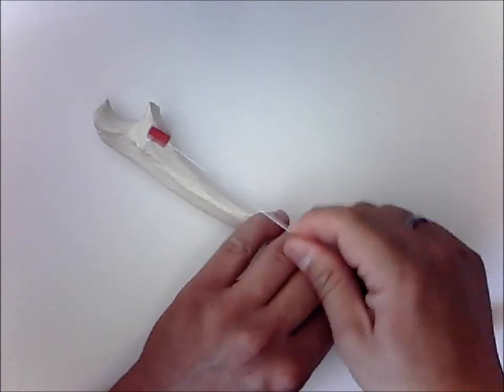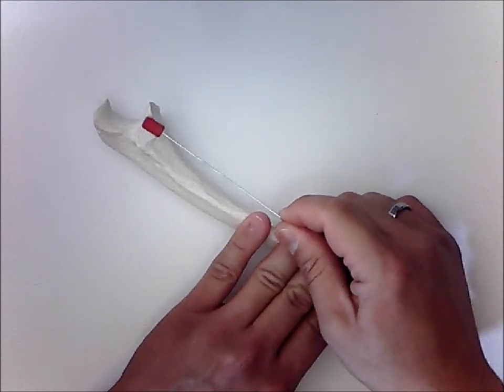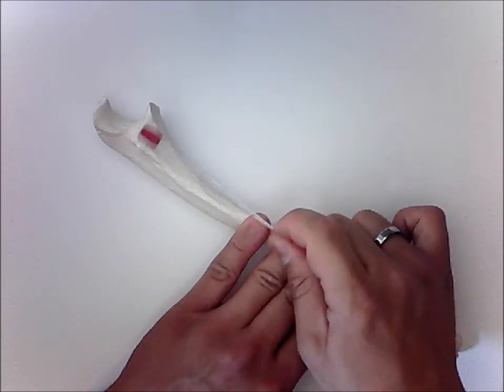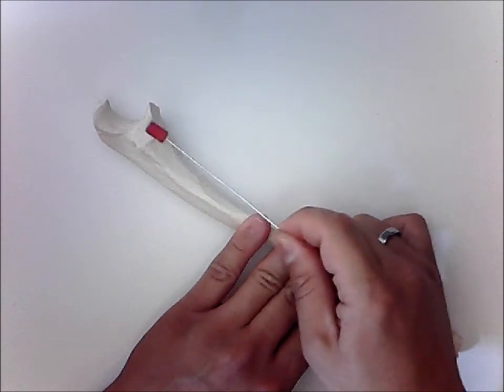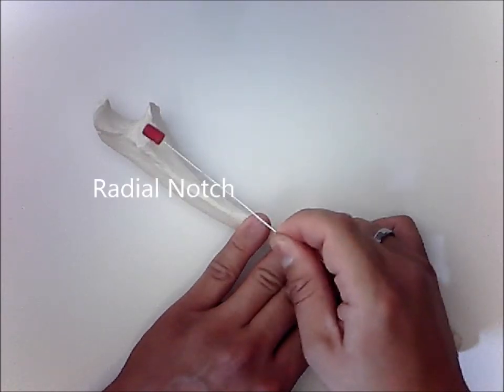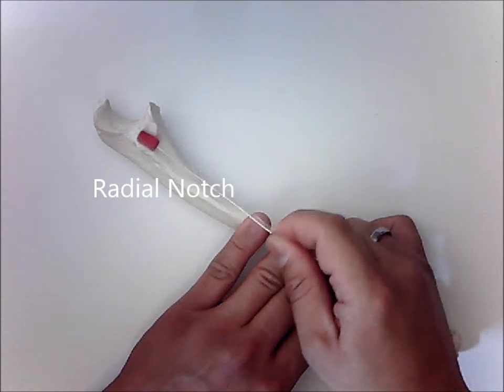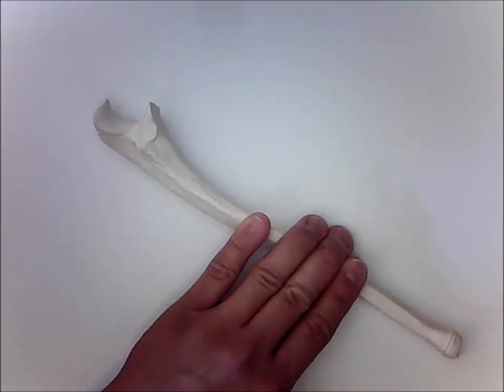On the lateral side of the bone, right next to the trochlea, you have an indentation right here called the radial notch. This is where the head of the radius sits or articulates with.